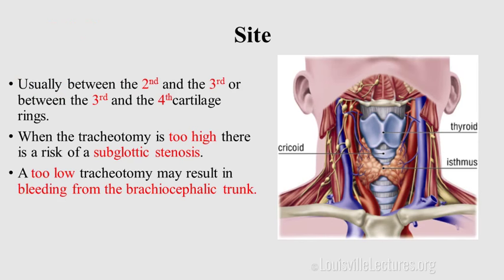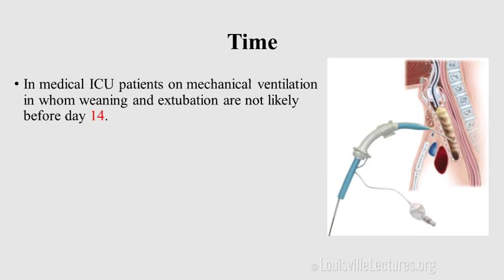The site of trach: we do it between the second and third, or third and fourth tracheal cartilage. If it's too high, it can cause some degree of subglottic stenosis. If it's too low, it can lead to bleeding from the brachiocephalic trunk.